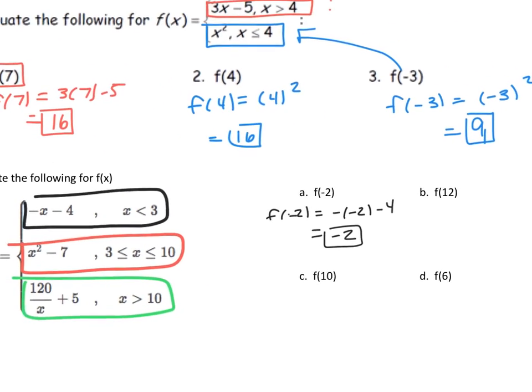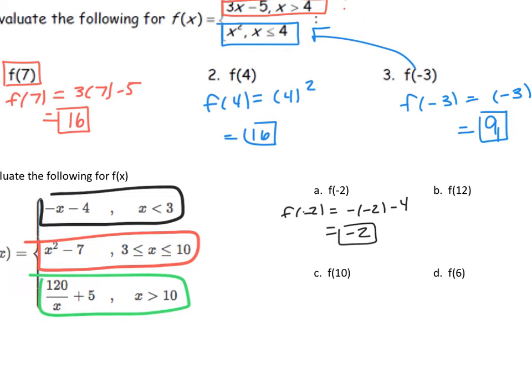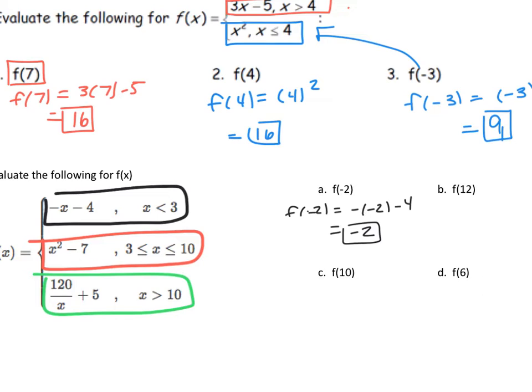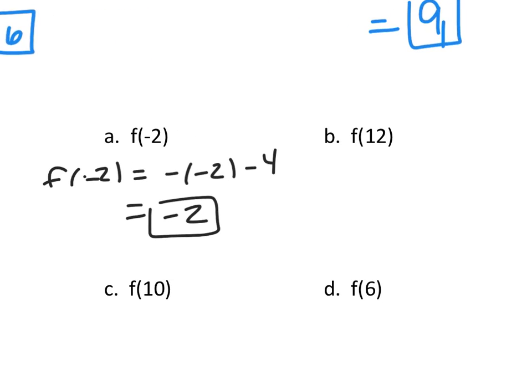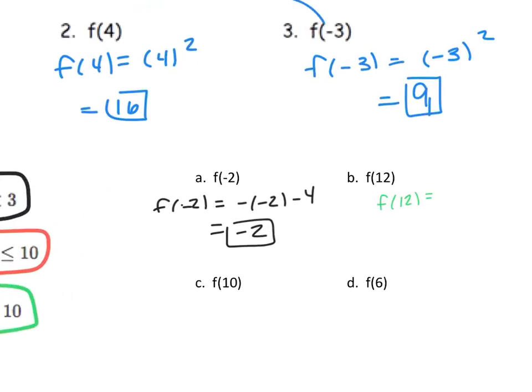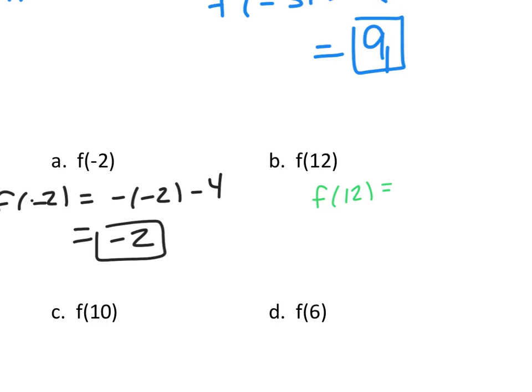Now we're going to plug in 12. Now instead of going from bottom to top, I'm going to go top to bottom. Is 12 smaller than 3? Nope. Is 12 in between 3 and 10? Nope. Is 12 larger than 10? Yes. So I'm going to plug it into my green piece. So f(12) equals 120 over 12 plus 5. 120 divided by 12 is 10. 10 plus 5 is 15. That's your y coordinate.